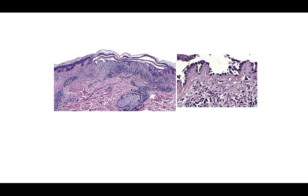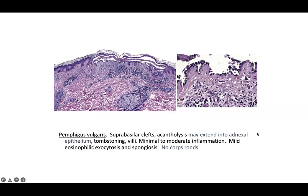On the left it may be difficult to tell, but you do have a true bulla forming. On the right it gives a sense that it's not purely subepidermal — it's got an intraepidermal component because basal layer cells are still connected firmly to the basement membrane. This pattern is called tombstoning — the buzzword should make you think about pemphigus vulgaris, with suprabasilar clefting and acantholysis.